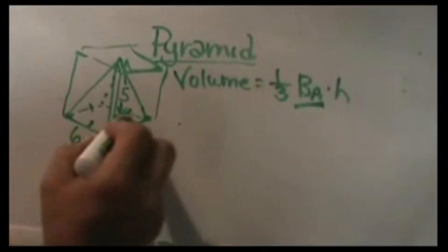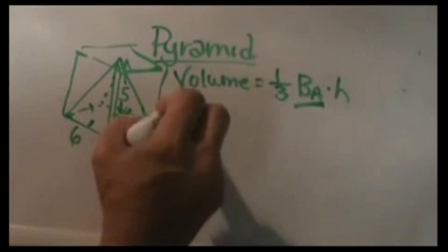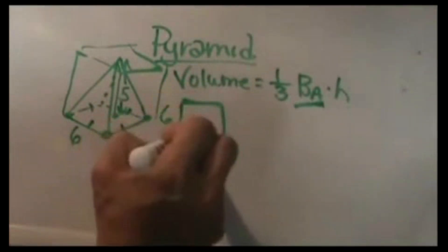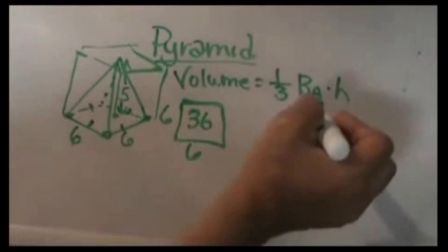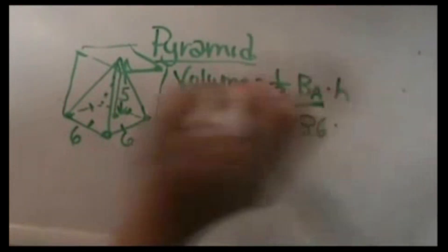To find the base area we're just going to look at that as a square. We have a square base that is six by six so the area is 36 square units. So I'm going to plug a 36 in for the base area.